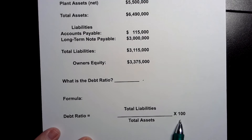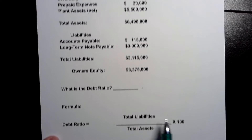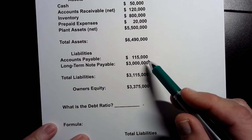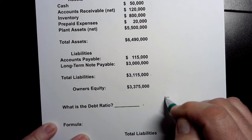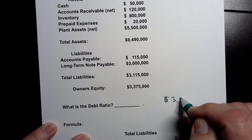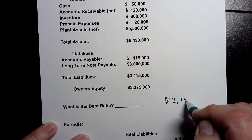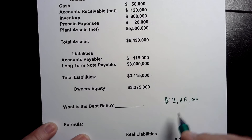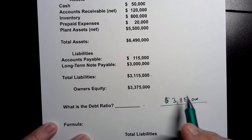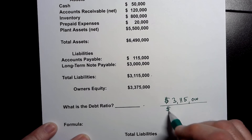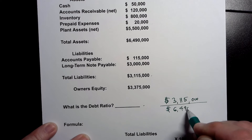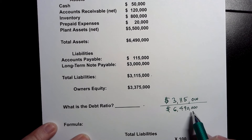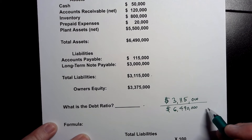So it's a fairly straightforward calculation. Our total liabilities are three million one hundred and fifteen thousand dollars, and we're going to divide that by our total assets. Our total assets are six million four hundred and ninety thousand dollars. So we're going to do the division and then multiply it by a hundred.